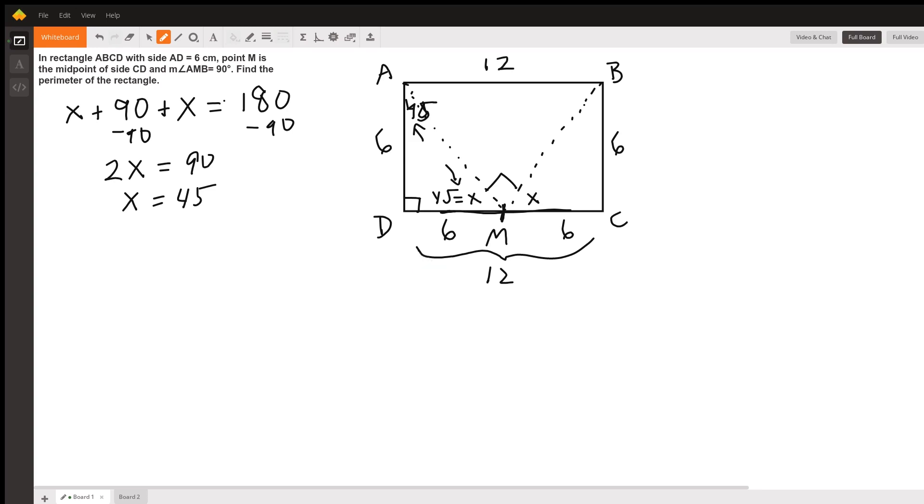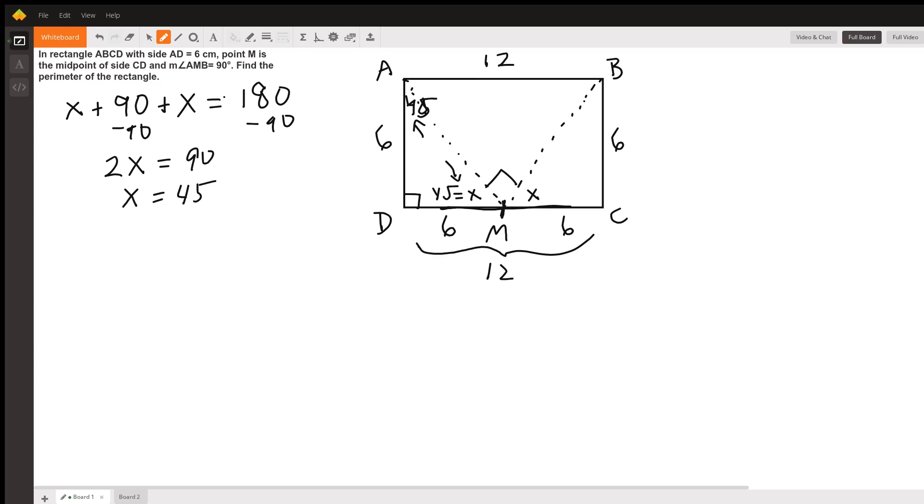So now we know all the sides of this rectangle and we can find the perimeter just by adding up 12 plus 12 plus 6 plus 6, which adds up to 36. And that is the perimeter.